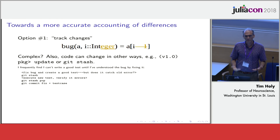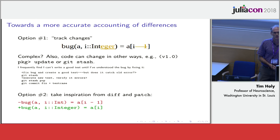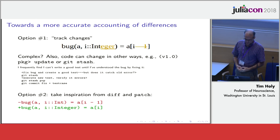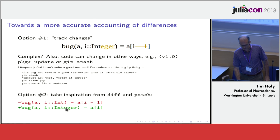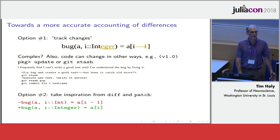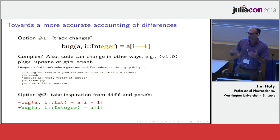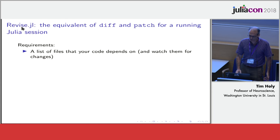There's another, editor-independent approach to solving this — taking inspiration from very old-fashioned Unix tools like diff and patch. The important thing is that not only does diff understand you're adding a method, but that you need to delete the old one as well. What I basically wanted to do was create diff and patch for a running Julia session. Diff, patch, and git handle that for your file system, but it doesn't happen for your live Julia session. That was the motivation behind the package I developed called Revise.